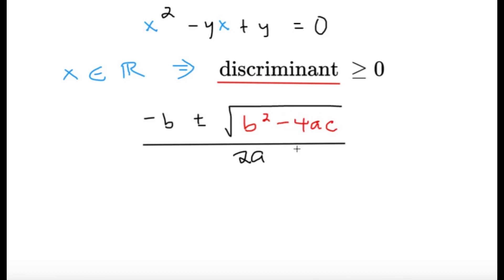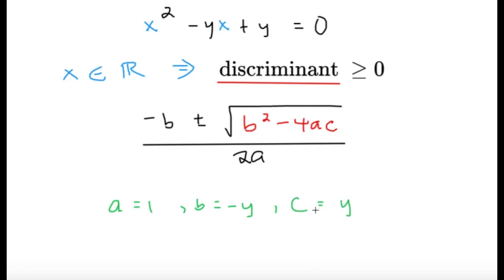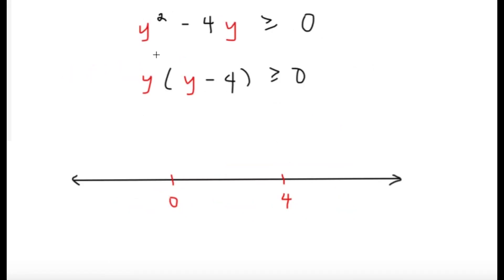Let's get the values of a, b, and c from the equation. The a is the coefficient of x squared, so that's just 1. For b, that's the coefficient beside x, which is technically negative y. And c here is the constant term, which is y. After getting the values of a, b, and c, all we have to do is get the discriminant by substituting these three values. We would get that the discriminant is equal to y squared minus 4y.